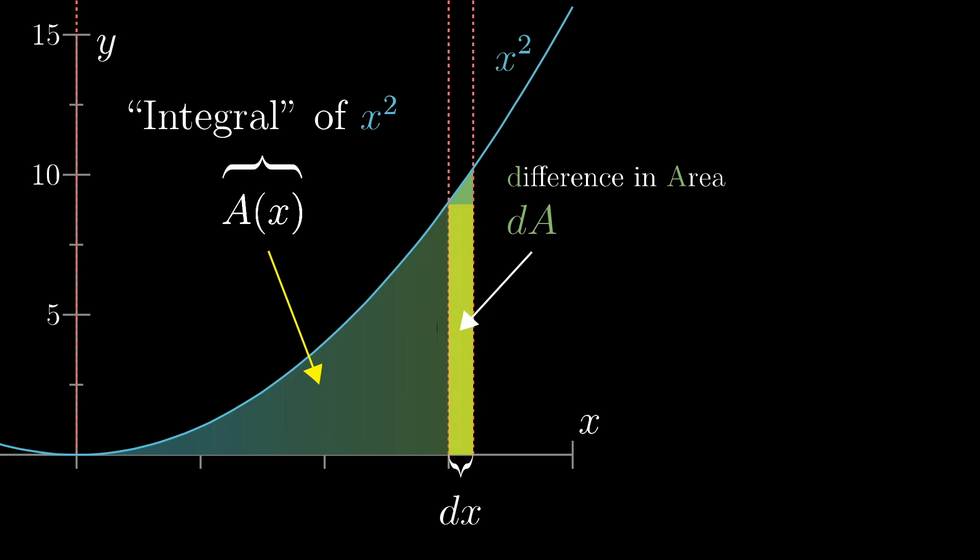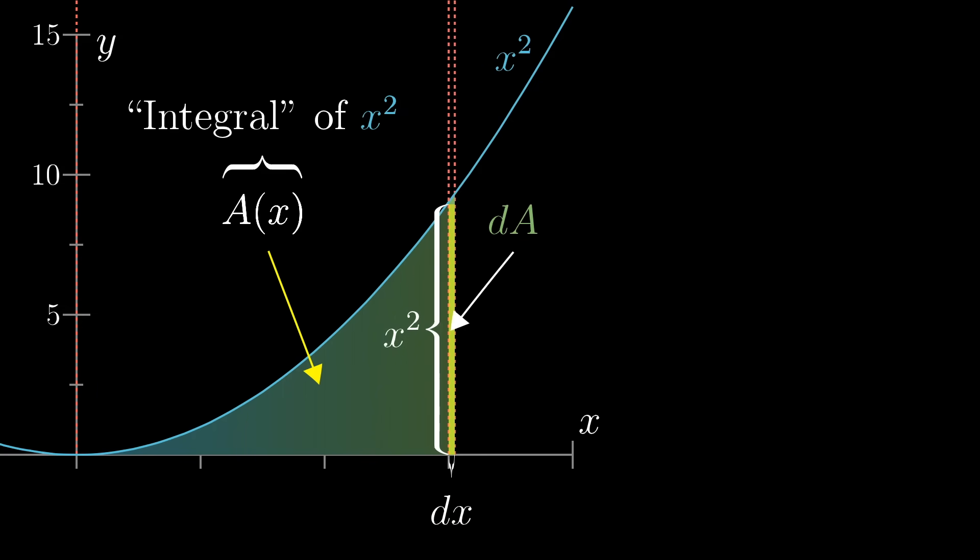That sliver can be pretty well approximated with a rectangle, one whose height is x squared and whose width is dx. And the smaller the size of that nudge, dx, the more that sliver actually looks like a rectangle.